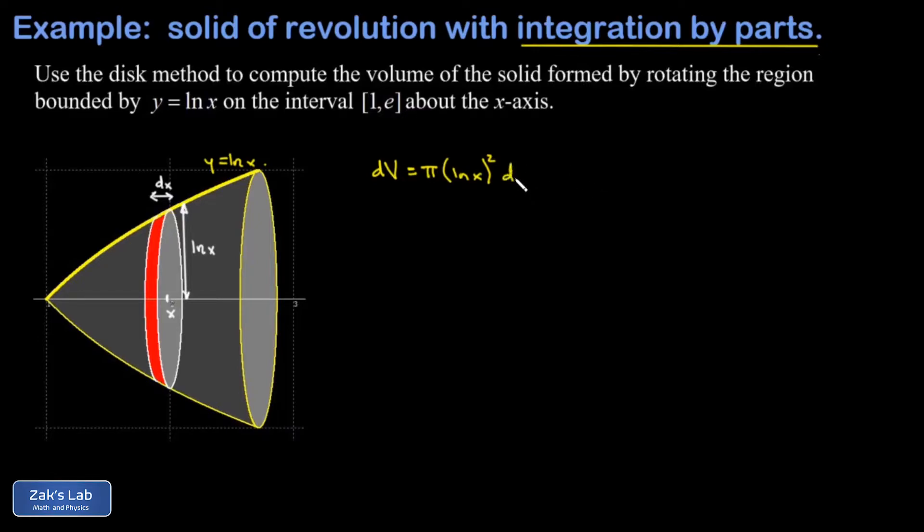To find the total volume we just add up all the volume contributions. That's what integration does. So we have the integral of dv, and if I plug in the definition of dv, I'm going to pull the factor pi out in front.